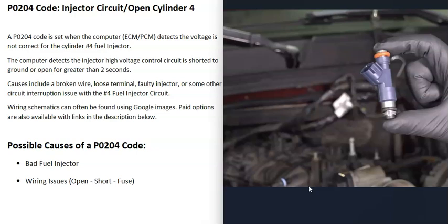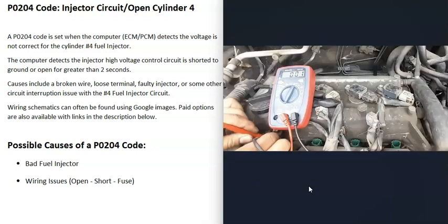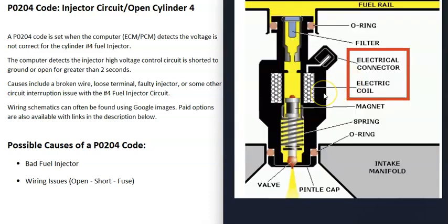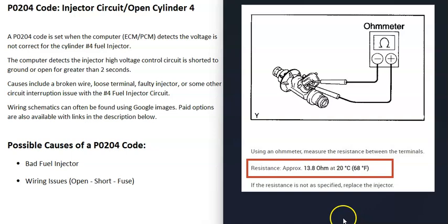If you have a multimeter, you can check the fuel injector to see if it's failed or not. These fuel injectors have a small coil inside — when voltage goes to that coil, it energizes it, pulling up on a small magnet which lets fuel into the cylinder. You can use a meter to test this coil. Each injector has a rated ohms value, so look up the spec for your particular injector, test it with your meter, and if it's outside that range, you know it's bad.